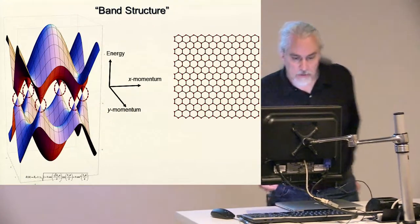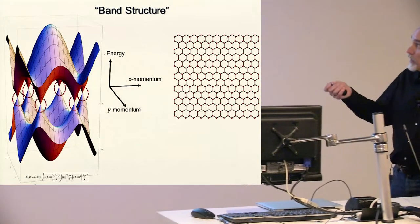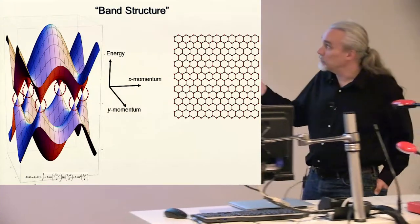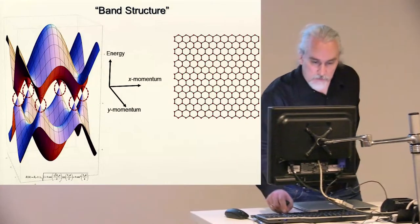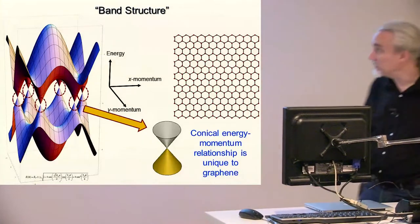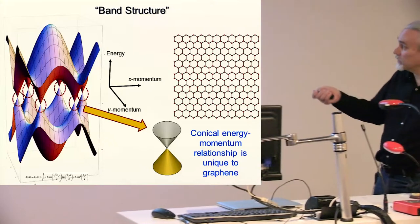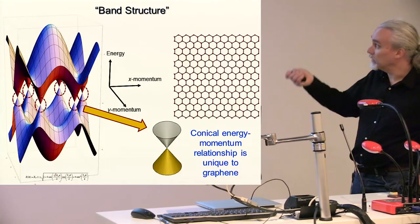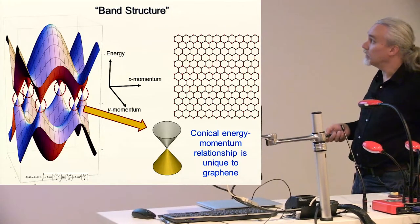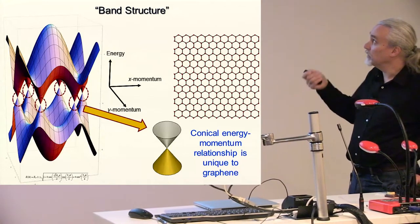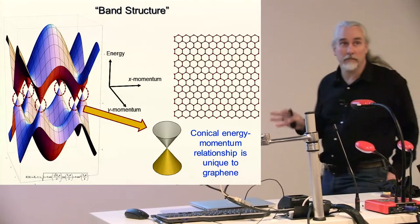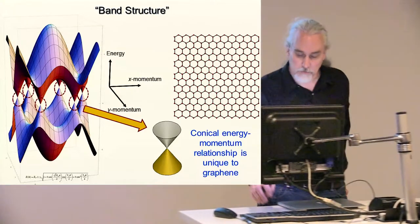So these points here where graphene conducts are actually turn out to be quite special, other materials don't have points that look quite like this they have this funny conical structure we have this cone here touching an upside down cone here and this conical relationship between energy and momentum is unique to graphene graphene has this but other materials don't and that's something that's really qualitatively different.